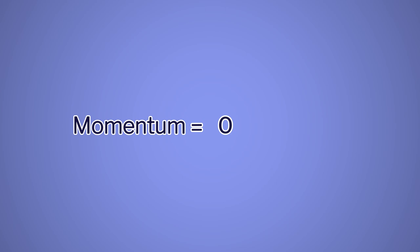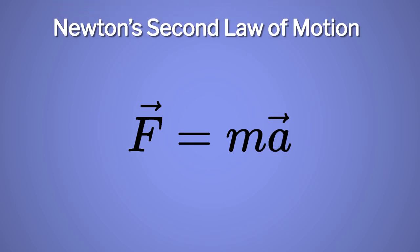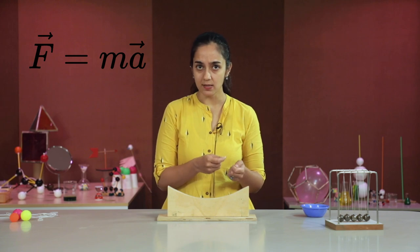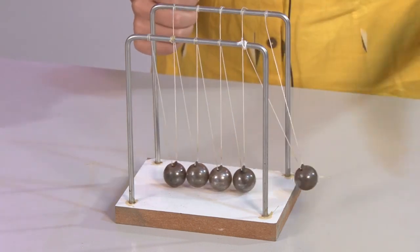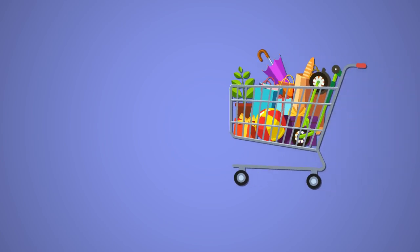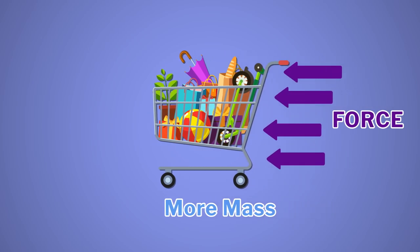Acceleration, as you have learned before, is the change in velocity per unit time. According to Newton, the force required to accelerate an object depends on its mass and how much acceleration we want to acquire — that is, F equals m times a. This is Newton's second law of motion: force equals mass times acceleration. In the Newton's cradle, the force we apply on the marble depends on the mass of the marble and how much acceleration we want. Thus we get an answer to our original question: a full shopping cart has more mass, so to accelerate it we have to push it with more force.